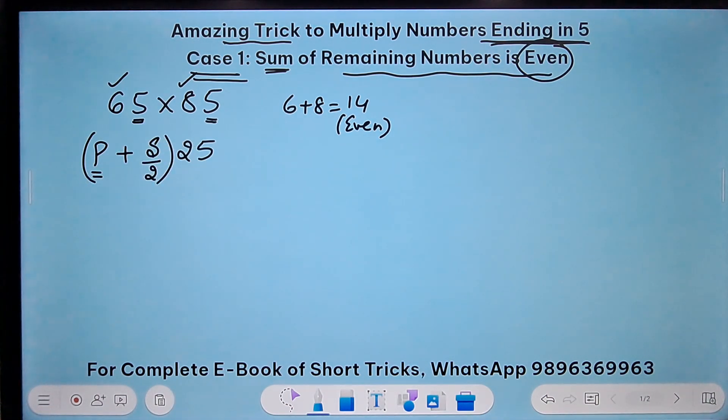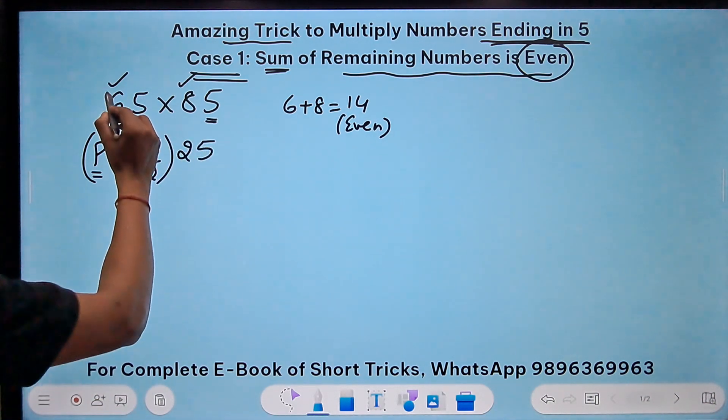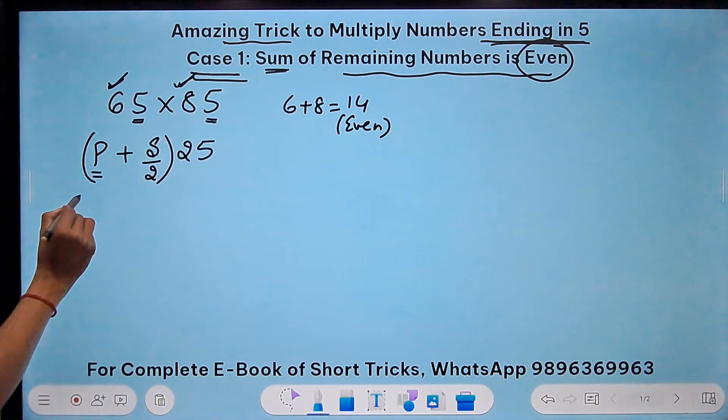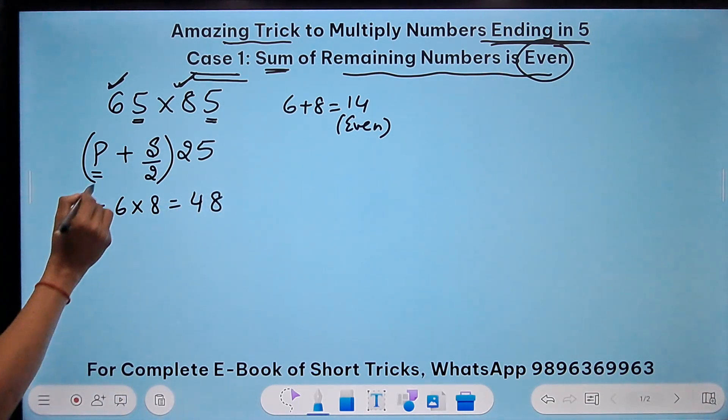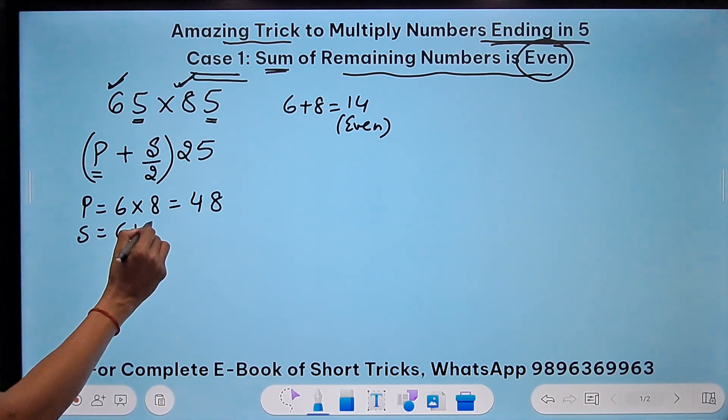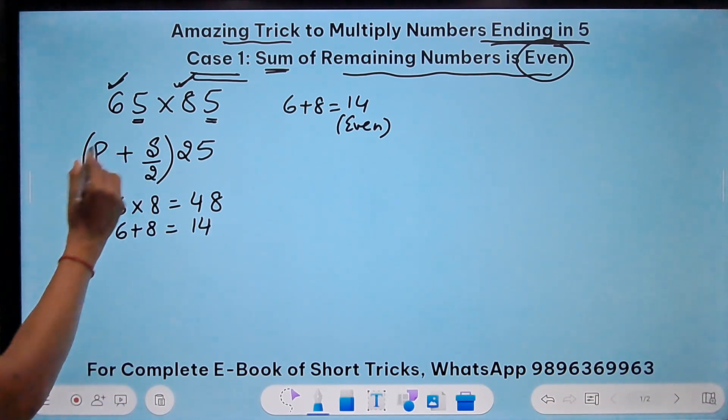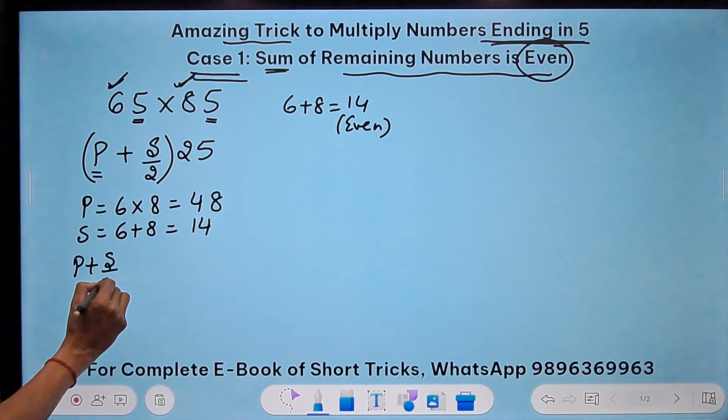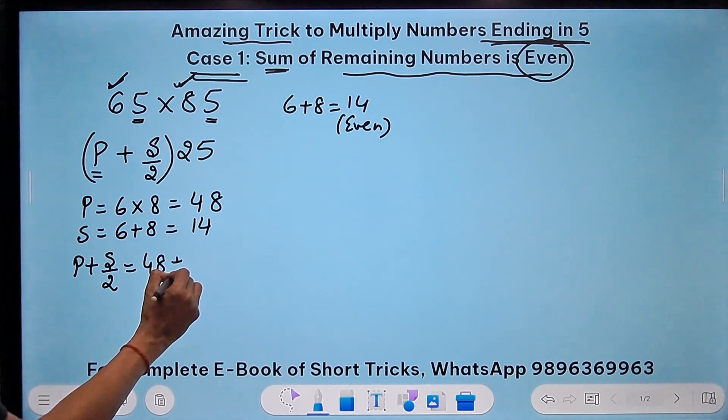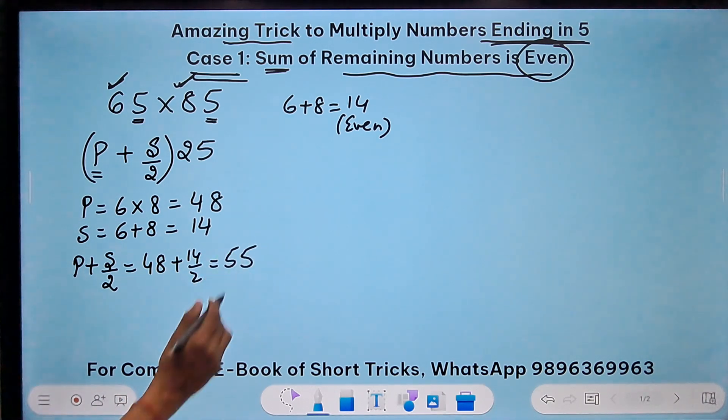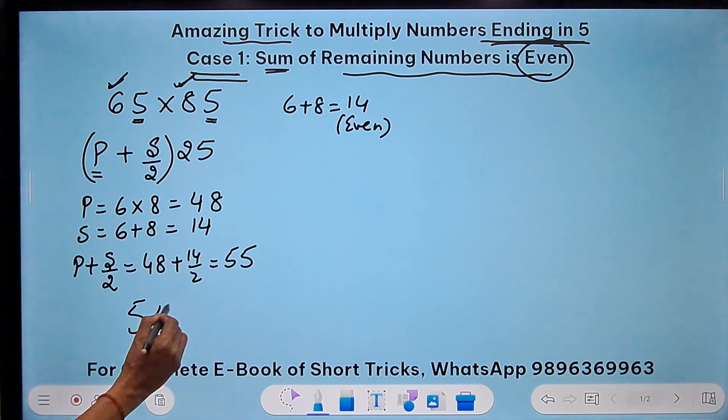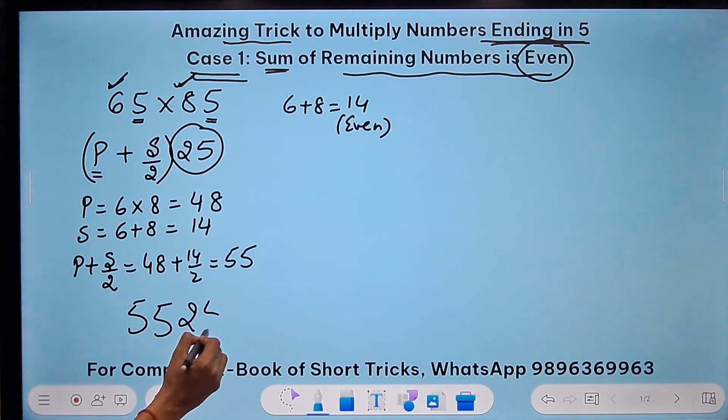What is P? For P you take the product of the remaining numbers. So P equals 6 into 8 that is 48, and S is the sum of these two, 6 plus 8 that is 14. If I calculate P plus S by 2, this becomes 48 plus 14 by 2, that is 48 plus 7, and that is 55. This 55 suffix by the number 25 will give me my final answer 5525.